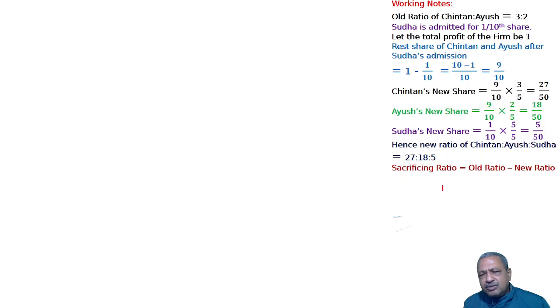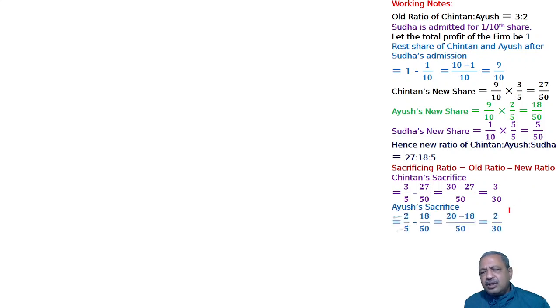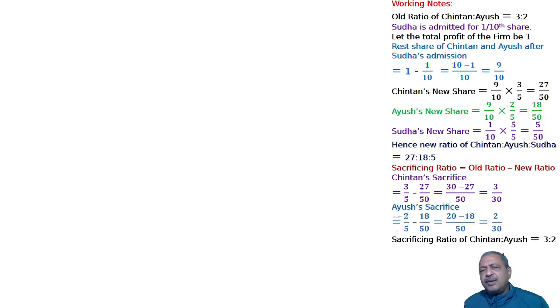Now we calculate the sacrificing ratio: old share minus new share. Chintan's sacrifice is 3/30, Ayus's sacrifice is 2/30. So the sacrificing ratio of both is 3:2.